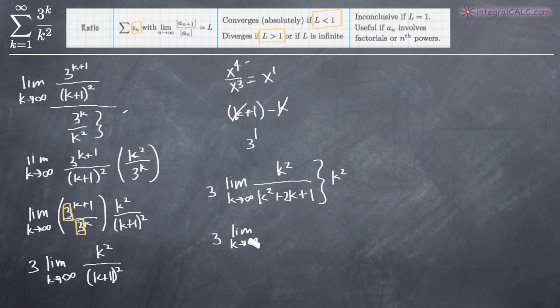So what we're left with is, and we'll be dividing every single term by k squared. So when we divide k squared by k squared, we'll get 1. When we divide k squared in the denominator by k squared, we'll get 1. 2k divided by k squared gives us 2 over k, and 1 divided by k squared gives us 1 over k squared.